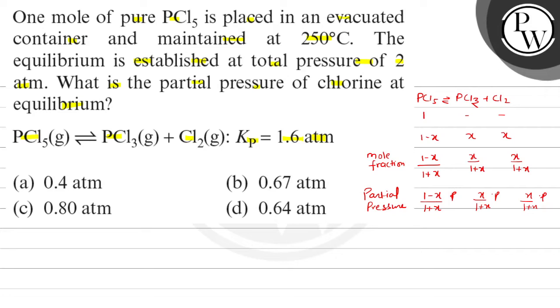X square, x square upon one plus X square. I mean I have one minus X upon one plus X, P into P, P square. P cancels, so 1 plus X, 1 plus X cancel. One minus X square, Kp value is 1.6, X square upon one minus X square into P value, question me kitnay given a, two atmosphere.